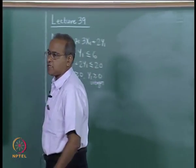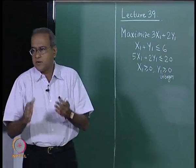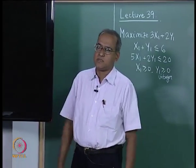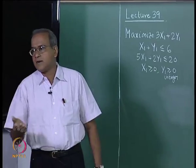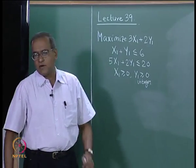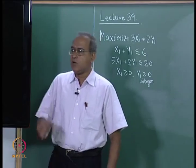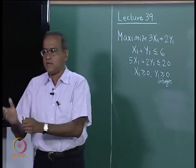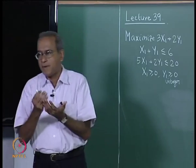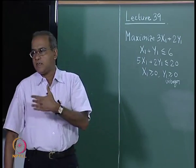Let us look at another method to solve the MILP problem, where we partition the variables into two sets: those that should take integer values and those that can take continuous values. The use of X for continuous variables and Y for integer variables is precisely to partition them at some point into two sets. We will look at a partitioning algorithm where we partition the variables and then solve the problem.